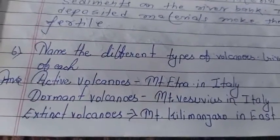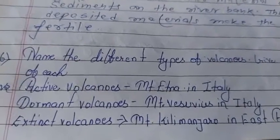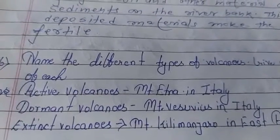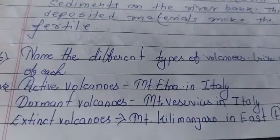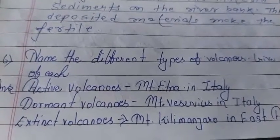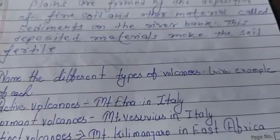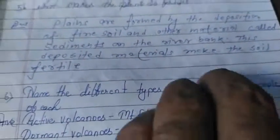Second, dormant volcano — example: Mount Visubias in Italy. Third, extinct volcano — example: Mount Kilimanjaro in East Arabia.